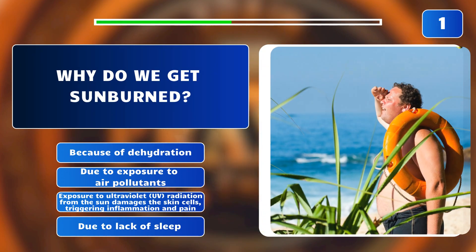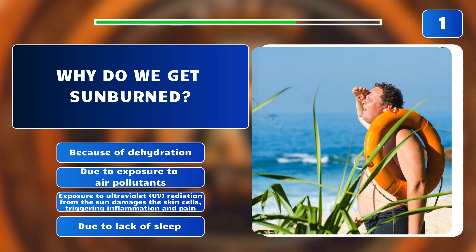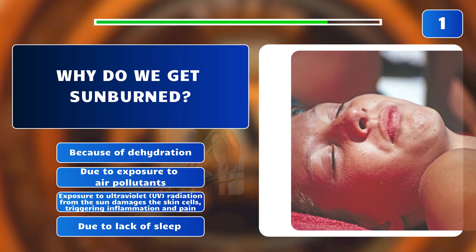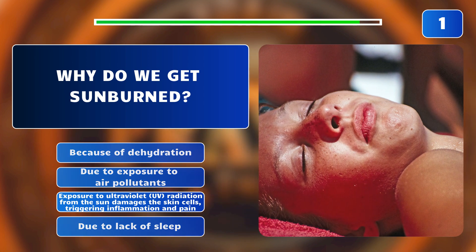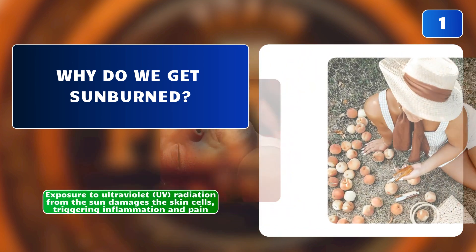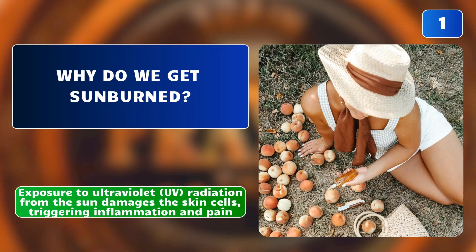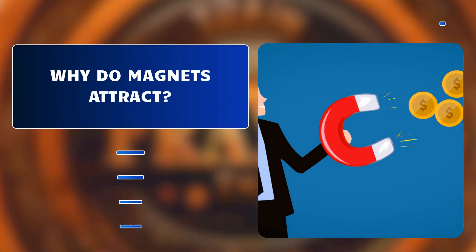Exposure to ultraviolet UV radiation from the sun damages the skin cells, triggering inflammation and pain. The answer is: exposure to ultraviolet UV radiation from the sun damages the skin cells.